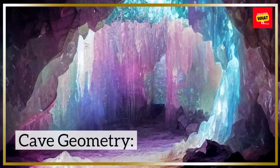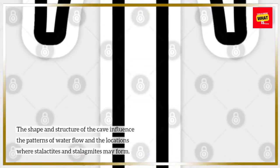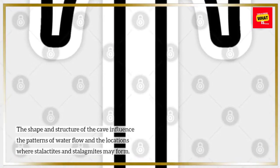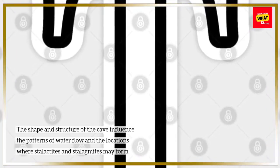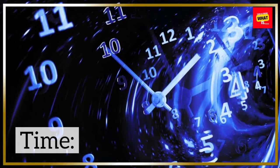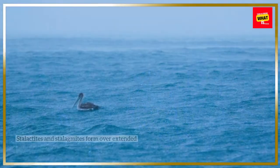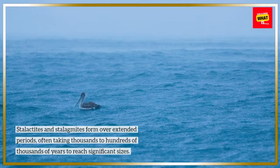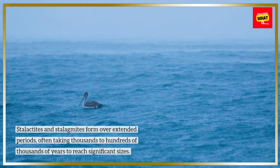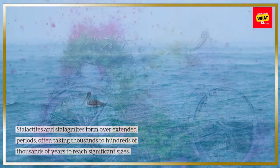Cave Geometry: The shape and structure of the cave influence the patterns of water flow and the locations where stalactites and stalagmites may form. Time: Stalactites and stalagmites form over extended periods, often taking thousands to hundreds of thousands of years to reach significant sizes.